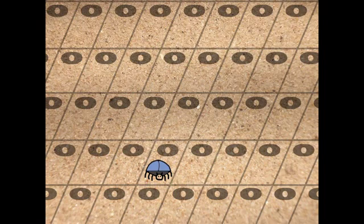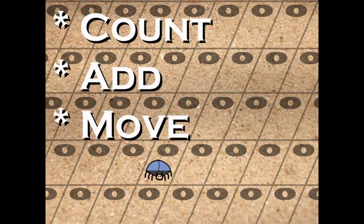At the start of the experiment, all grid squares have the value zero. Our friend Bob only does three things in life: count, add, and move. He starts counting at one, then adds, then moves.